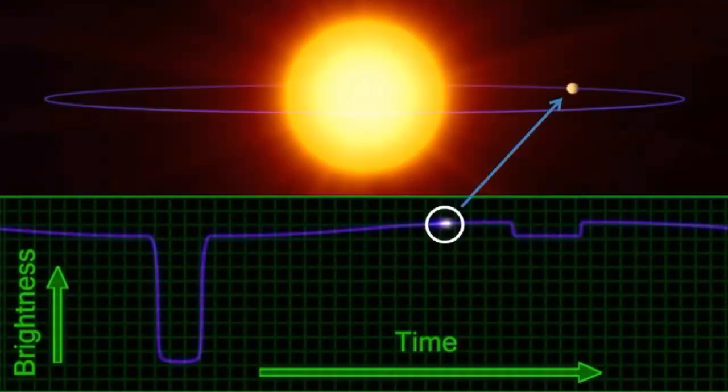Then as the planet continues, it gets illuminated as it travels around the backside of its star just before it disappears behind the star. The flux curve brightens slightly since you have the full brightness of the star plus the light from the planet added in.